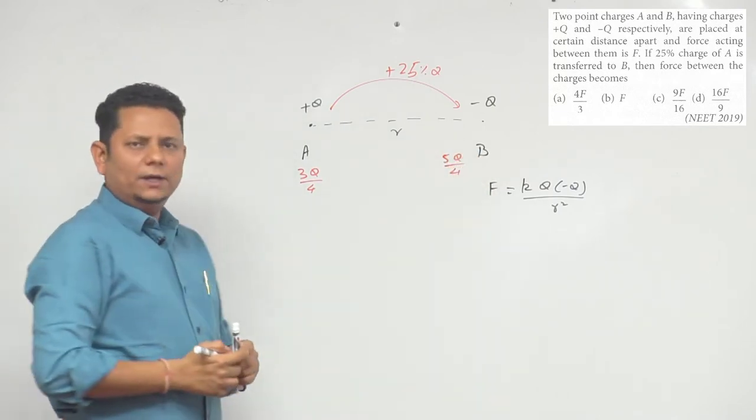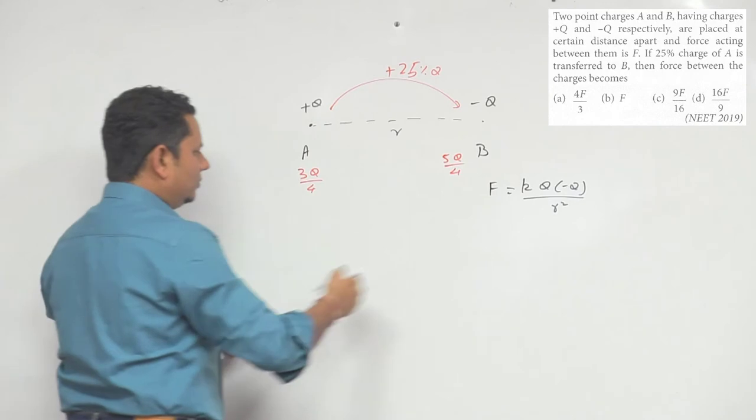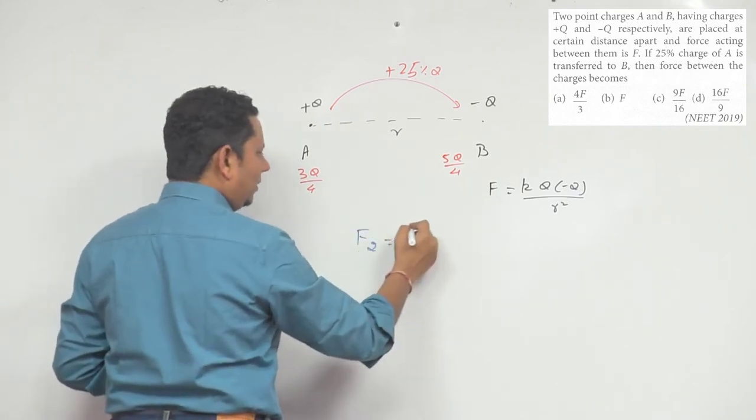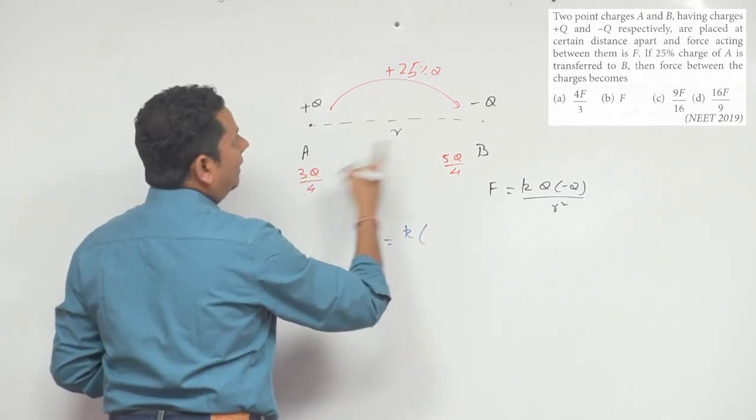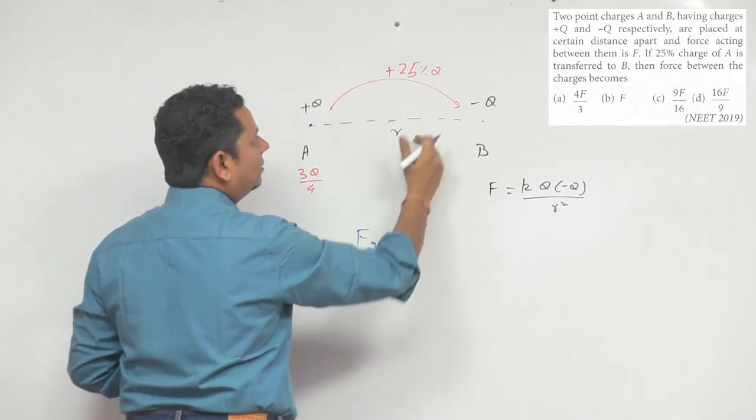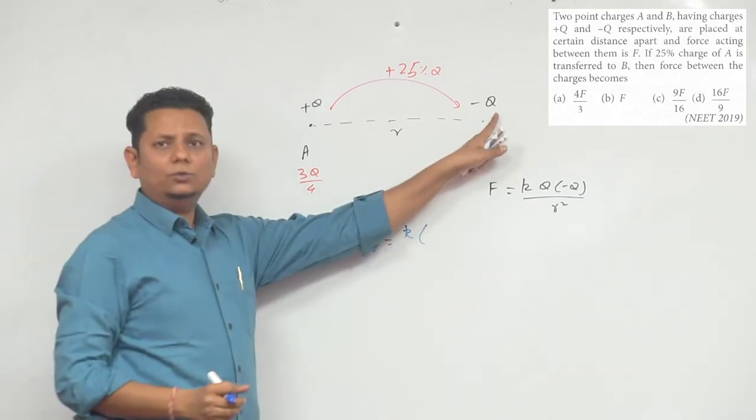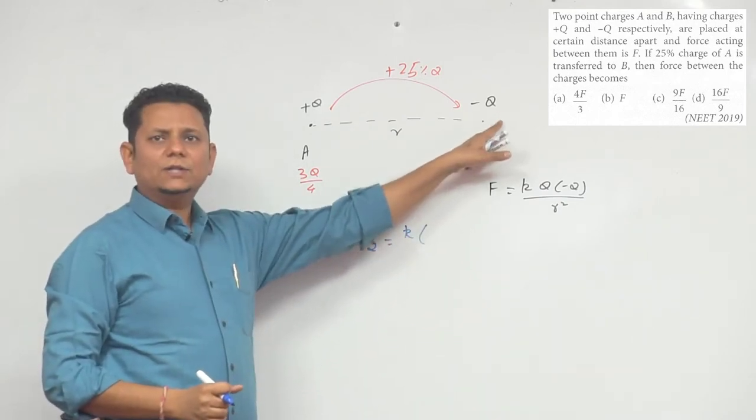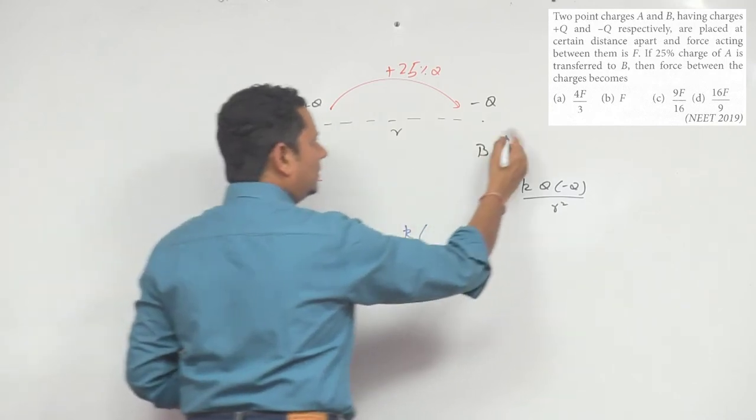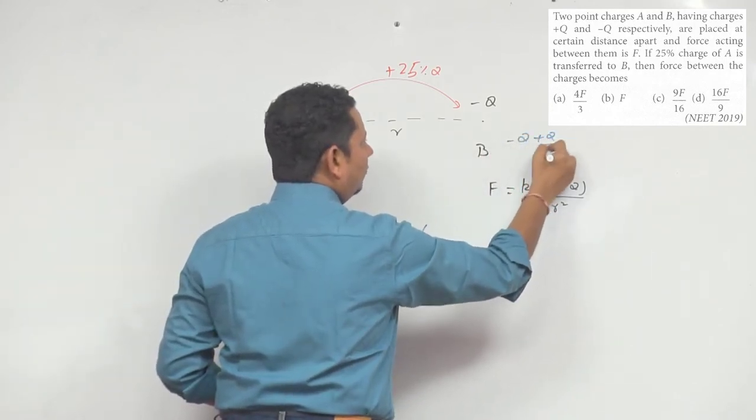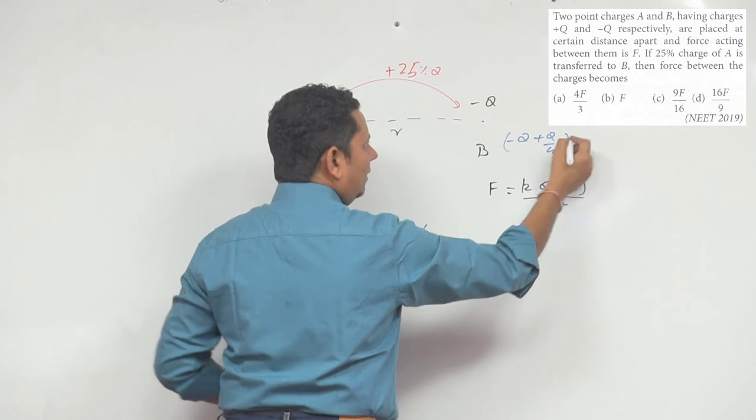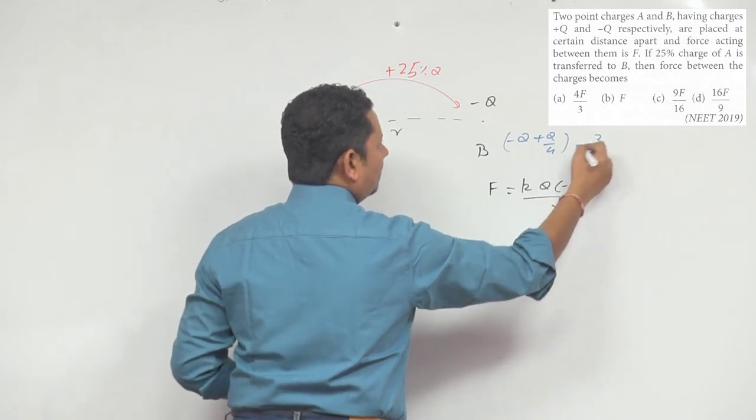Your charges become -Q + Q/4, and its value becomes minus 3Q/4. This is your charge value.